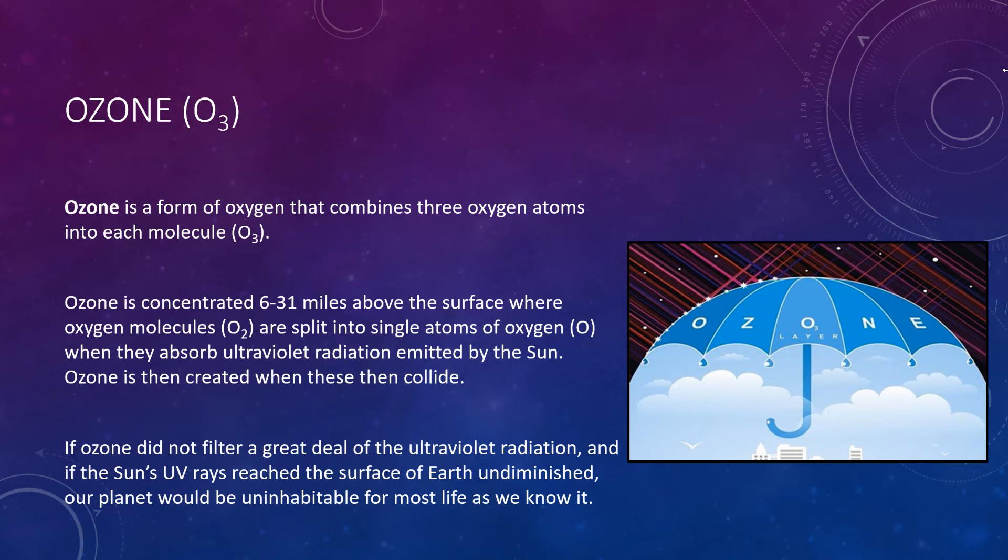Another important component of the atmosphere is ozone, which is a form of oxygen that combines three oxygen atoms into a single molecule called O3. Ozone is not the same as oxygen that we breathe, which has only two oxygen atoms per molecule. There is very little ozone in the atmosphere and its distribution is not uniform. It is concentrated between six and thirty-one miles above the surface in a layer called the stratosphere. In this altitude range, oxygen molecules are split into single atoms of oxygen when they absorb ultraviolet radiation emitted by the sun. Ozone is then created when a single atom of oxygen and a molecule of oxygen O2 collide. This must happen in the presence of a third neutral molecule that acts as a catalyst by allowing the reaction to take place without being consumed in the process.